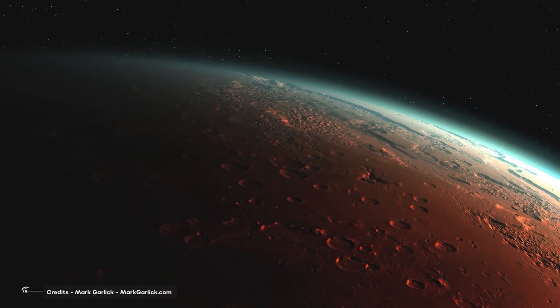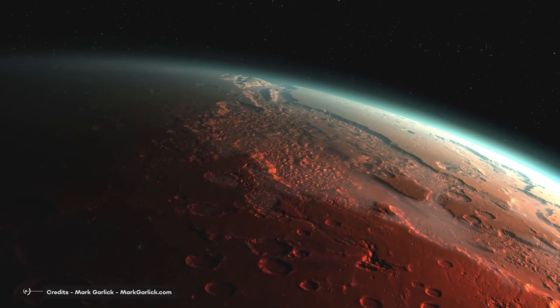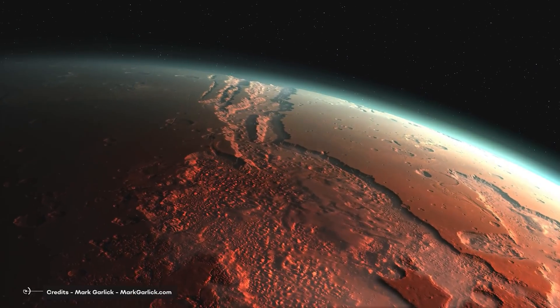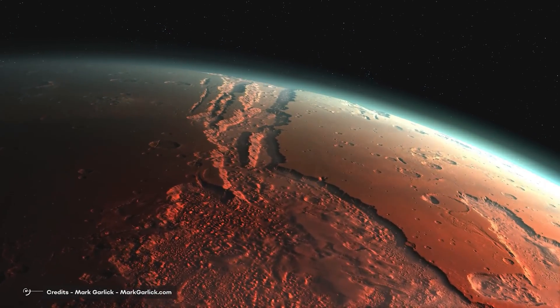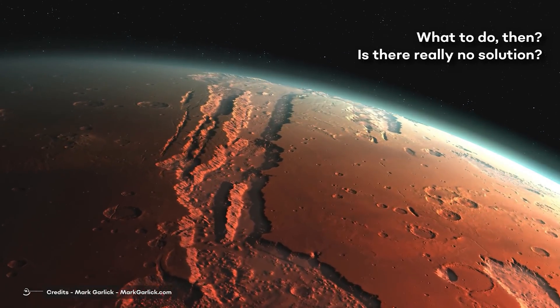And this suggests that it would be, unfortunately, completely useless to try to terraform Mars without first solving its biggest problem: the absence of magnetic protection able to divert the malevolent flow of solar particles. What to do then? Is there really no solution?